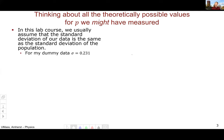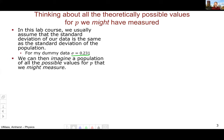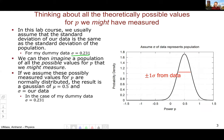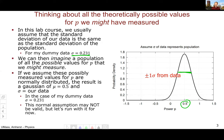In this lab course we usually assume that the standard deviation of our data is the same as the standard deviation of the population. For my dummy data I measured a standard deviation of 0.23, and we're going to assume that's representative of the distribution of all possible values for the power. We can imagine a population of possible power values that are normally distributed — a bell curve with a mean of 0.5 and a standard deviation of 0.23.